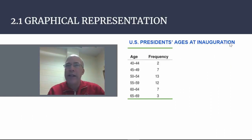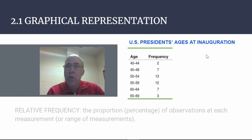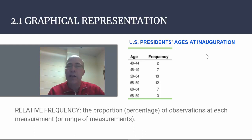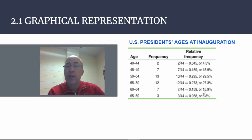Another way to look at these is graphically. Here we have ages at inauguration — 44 presidents and the number of presidents within each age grouping. One thing we can look at is the relative frequency: the proportion or percentage of observations at each measurement. We take each frequency and divide by 44 to get relative frequencies. For example, 27.3% of the presidents were between 55 and 59 years of age, and 6.8% were between 65 and 69.